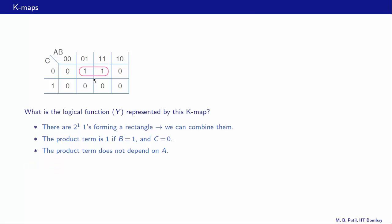The product term does not depend on a — it is one when a is zero and also when a is one. The only product term satisfying all of these conditions is b·c̄, which is one if b is one and c is zero and does not depend on a. In this specific example the product term is the logical function y itself, because this single rectangle covers all the ones in the K-map. Therefore y = b·c̄.